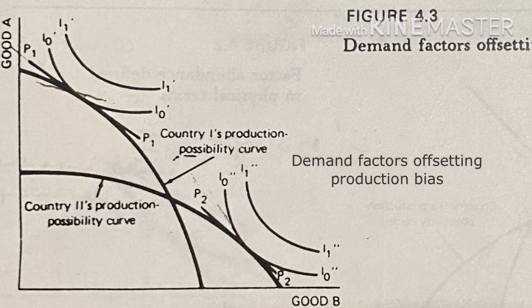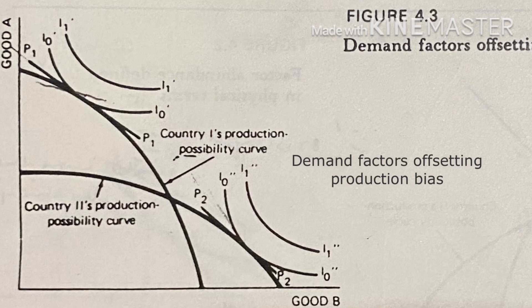Demand in the two countries is characterized by two sets of indifference curves, where curves i'0, i'1, etc. represent demand in country one, and curves i''0, i''1, etc. represent demand in country two. Demand in country one is obviously biased towards the capital-intensive good, and demand in country two is biased towards labor-intensive goods. Thus in isolation — without trade — good A is relatively more expensive in country one than in country two. This is shown by the fact that commodity price line p2 p2 in country two is steeper than p1 p1 in country one.